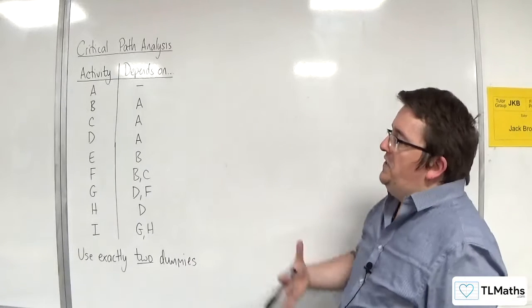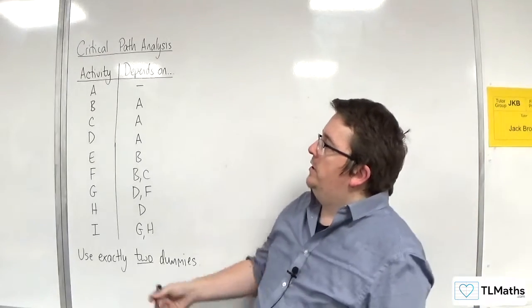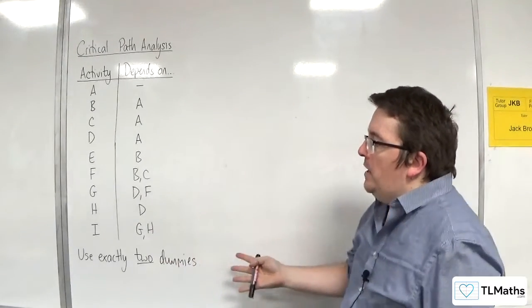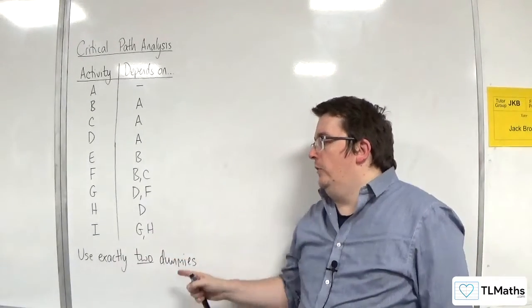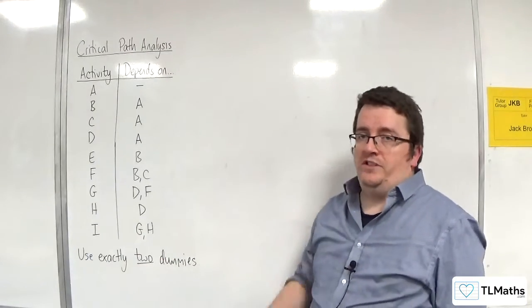In this video, we're going to draw the activity network, activity on arc, from this precedence table, and we have to use exactly two dummies.